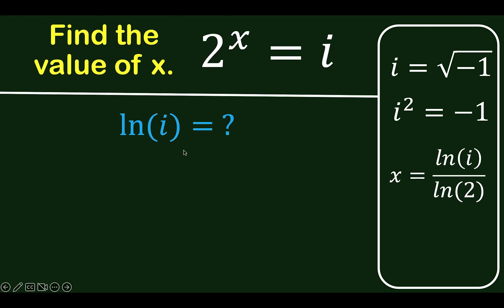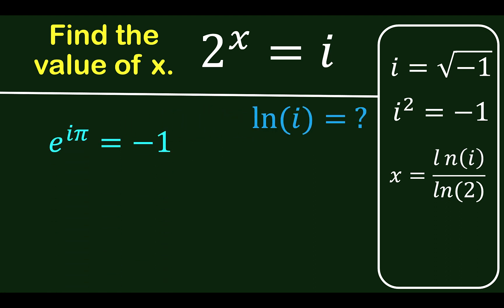Let's go back to ln of i. What's the value of this? We need to recall the Euler identity: e raised to iπ is equal to negative 1. Notice that we have negative 1 here, and we also said that i squared equals negative 1. So let's bring that here.